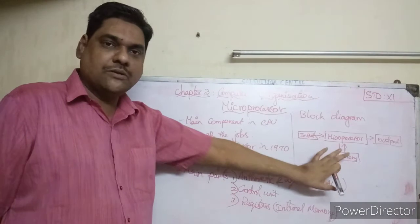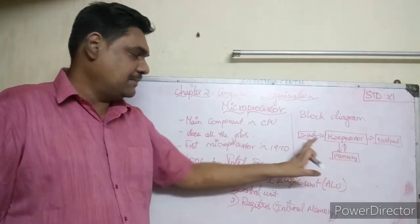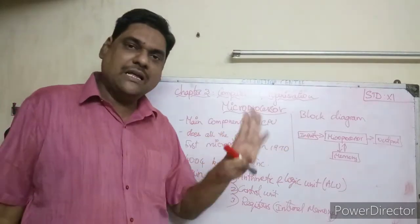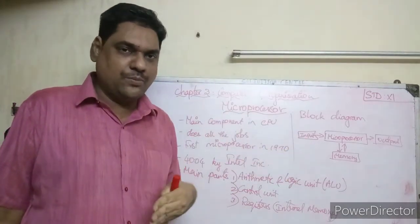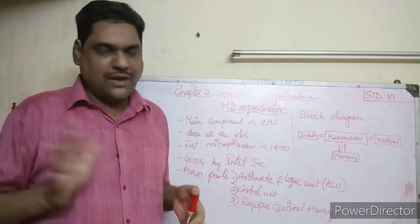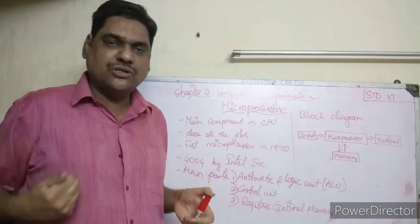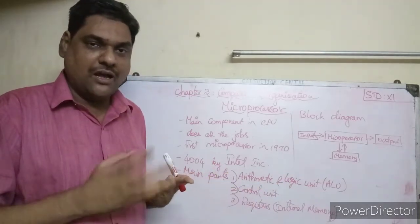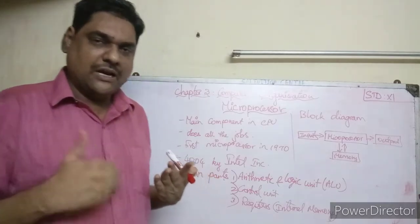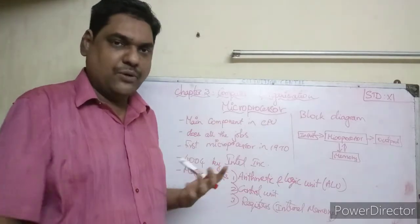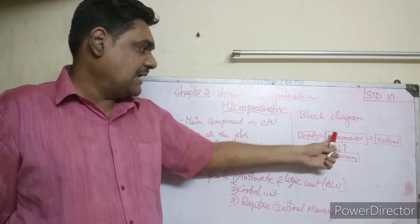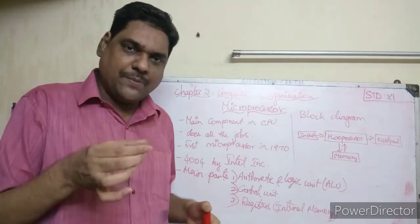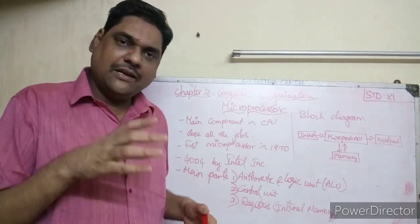Looking at the block diagram of a microprocessor: it takes input from an input device. Every input is in binary data — we cannot give English instructions directly to the microprocessor. The microprocessor gets input as binary data, and binary data conversion is performed.